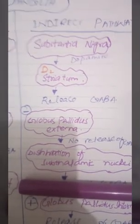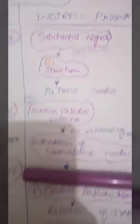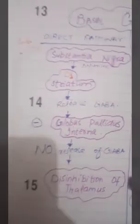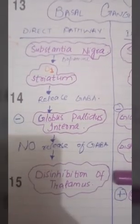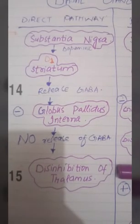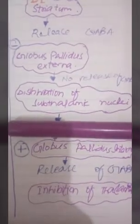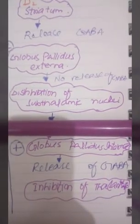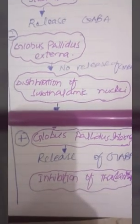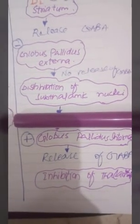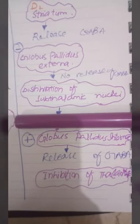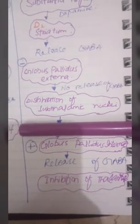There will be disinhibition of the subthalamic nuclei. This subthalamic nuclei then stimulates the Globus pallidus interna — which was inhibited in the direct pathway. Here, the Globus pallidus interna is stimulated, so there is release of GABA and there is inhibition of the thalamus. So the thalamus won't be sending pulses to the cortex.